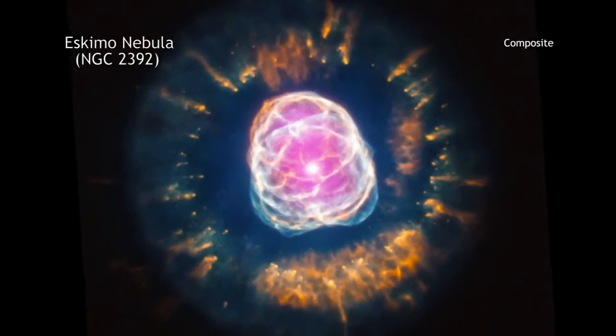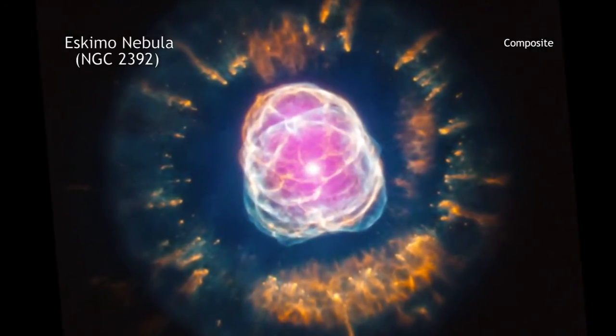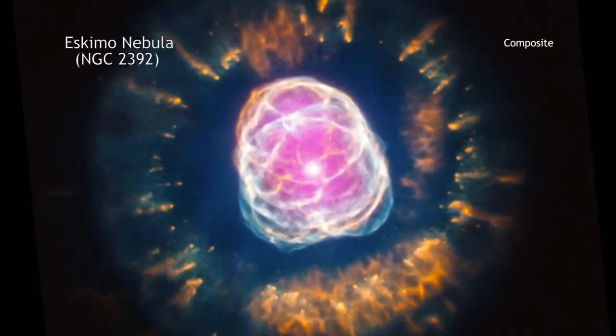NGC 2392, which is nicknamed the Eskimo Nebula, is what astronomers call a planetary nebula.